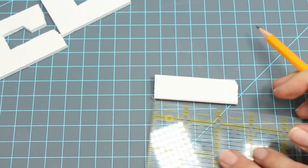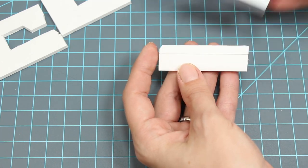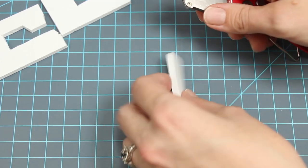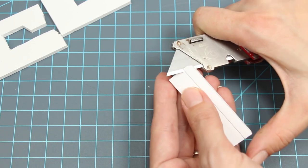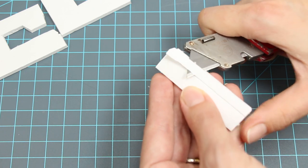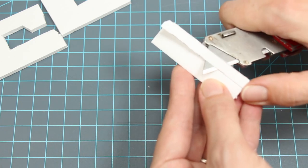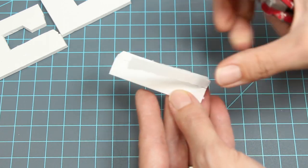Once you have everything cut out, take the half piece and draw a line across the top. Make sure it's on the right side by lining it up with the print. Take your knife and cut at an angle along the line. It should look like this when you're done.